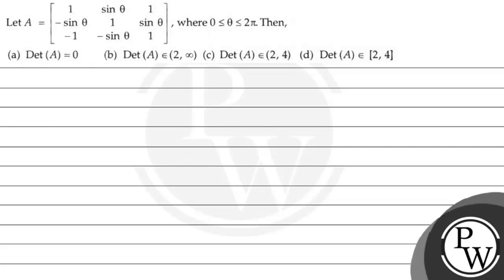Hello, let's see the question. The question says that A is equal to a matrix whose elements are 1, sin theta, 1, minus sin theta, 1, sin theta, minus 1, minus sin theta, 1, where 0 is less than or equal to theta, theta is less than or equal to 2 pi.